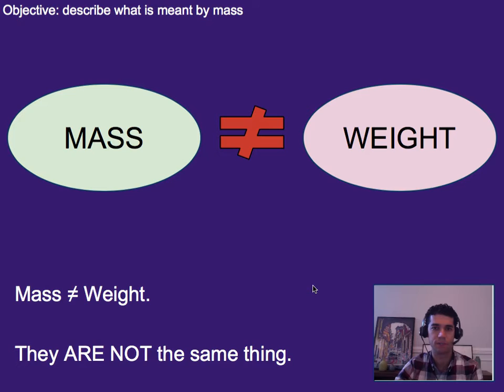Alright, so that was mass and volume. Now let's get to the difference between mass and weight, because you might be thinking, oh, big rock, that's like heavy, it's got a lot of weight, and so you might think it's the same thing as mass, but they're not. They're very much related, but they are not the same thing.